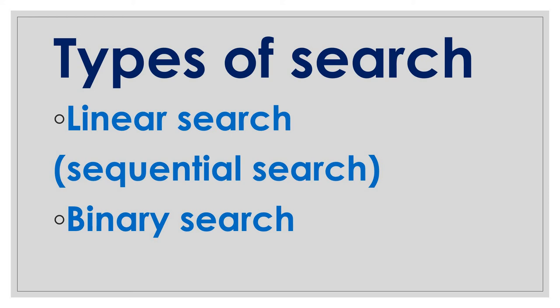A file is a collection of records, and a record is in turn a collection of fields. A field used to differentiate among various records is known as a key. For example, a telephone directory can be considered as a file where each record contains two fields: the name of the person and the phone number. Depending on the application, the key can be either the name of the person or the phone number.